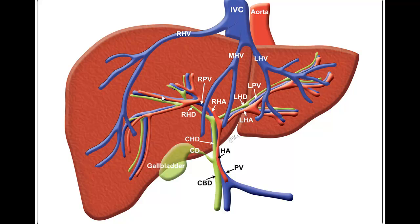Another picture of the liver: you can see here the inferior vena cava pulling used blood from the liver, the aorta feeding it. The red is the hepatic artery, the blue is the portal vein, and the green is the bile system. So the right hepatic duct, the left hepatic duct, common hepatic duct, then into the gallbladder — which is a storage area for bile and the drugs eliminated in the bile — then the common bile duct, which heads out to the duodenum.